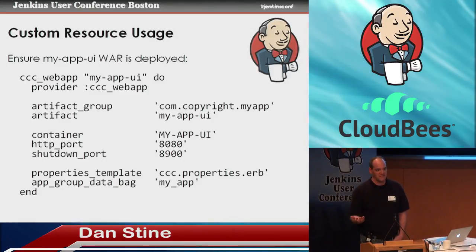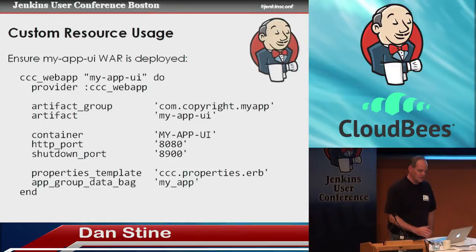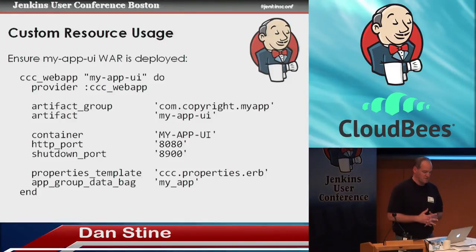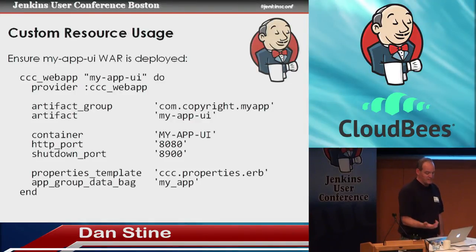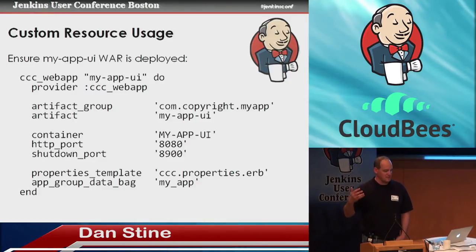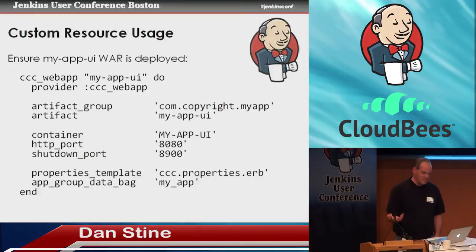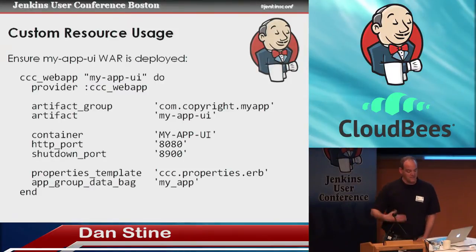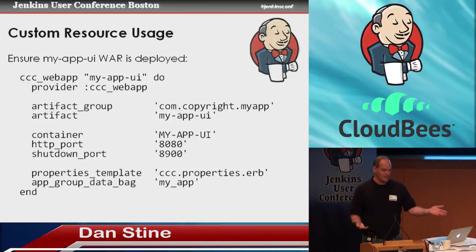Here we have an example of the actual usage of our custom resource — it's only about 12 lines. 'ccc_web_app' is the name of our custom resource; we've extended the DSL in the way that Chef makes very easy. It says: make sure that the UI for the my-app group is deployed. What's unique about this app? We need to give it the artifact group and name so the process can reach into Artifactory and retrieve it, the name of the Tomcat container it should run in, what port it should run on, and information about the properties file it needs — what template to use when substituting in data bag values. Everything else is standardized.